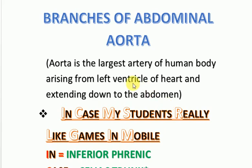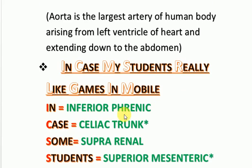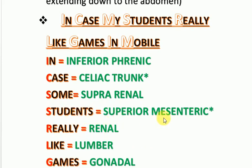To discuss the branches of the abdominal aorta, we have a mnemonic: 'In Case My Students Really Like Games In Mobile.' 'In' is for inferior phrenic arteries, 'Case' is for celiac trunk, 'My' is for suprarenal arteries, 'Students' is for superior mesenteric artery.